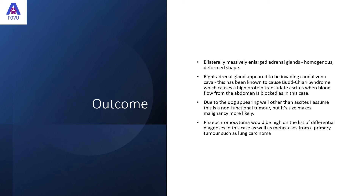Pheochromocytoma was high on the differential diagnosis list in this case, but metastases from a primary tumour such as a lung carcinoma was also a possibility. It was deemed that surgery to remove the right adrenal to stop the blockage of the caudal vena cava was unlikely to be successful. The prognosis was poor, so the owners opted to euthanase.